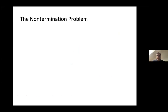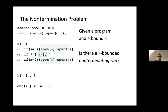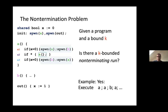The non-termination problem: given a program and bound k, is there a k-bounded non-terminating run — a run where every thread is switched out at most k times but the run is infinite? In this example, the answer is yes: you can keep spawning A's and B's and running them, producing many different non-terminating runs.